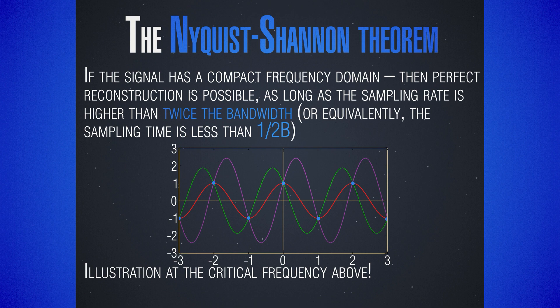What this theorem tells us is that we can take the continuous signal, digitalize it, and as long as we're digitalizing with a high enough sampling rate, we can always reconstruct our signal and get it back from its digital form to its analog form. The main idea of digital signal modulation is that we use the analog signal recorded by an external device — like a microphone — which must then be converted to digital form to use digital modulation on the transmitted waves.